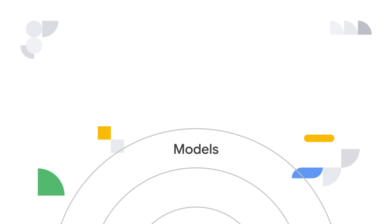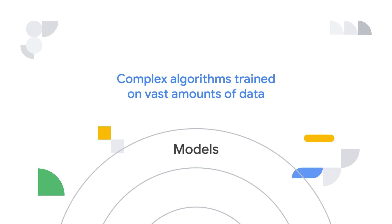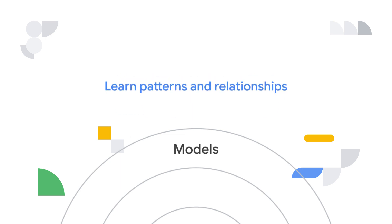The brain of the agent is the AI model. These models are complex algorithms trained on vast amounts of data. They learn patterns and relationships in the data, allowing them to generate new content, translate languages, answer questions, and much more.